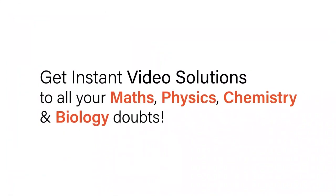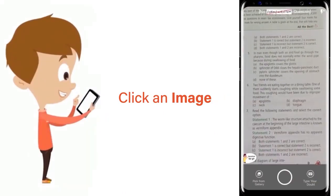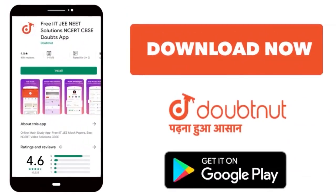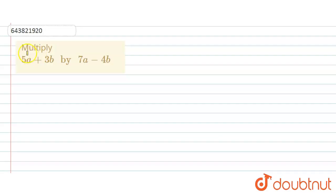With Doubtnet, get instant video solutions to all your maths, physics, chemistry, and biology doubts. Just click the image of the question, crop the question, and get instant video solution. Download Doubtnet app today. Hello, the question says that multiply 5a plus 3b by 7a minus 4b.